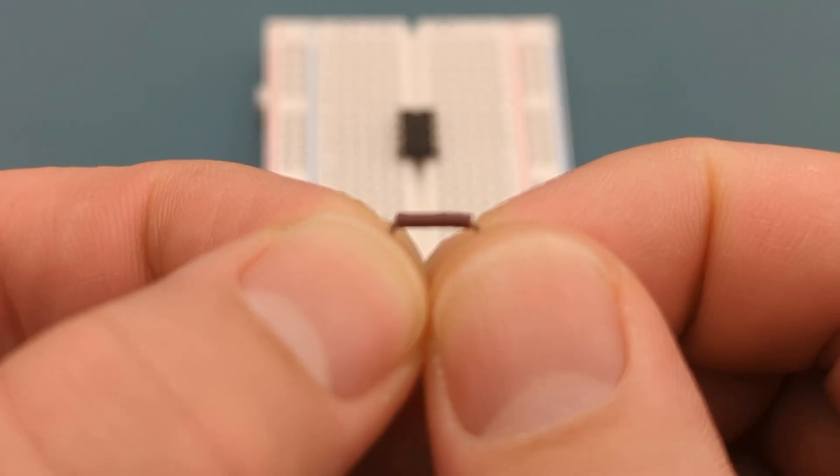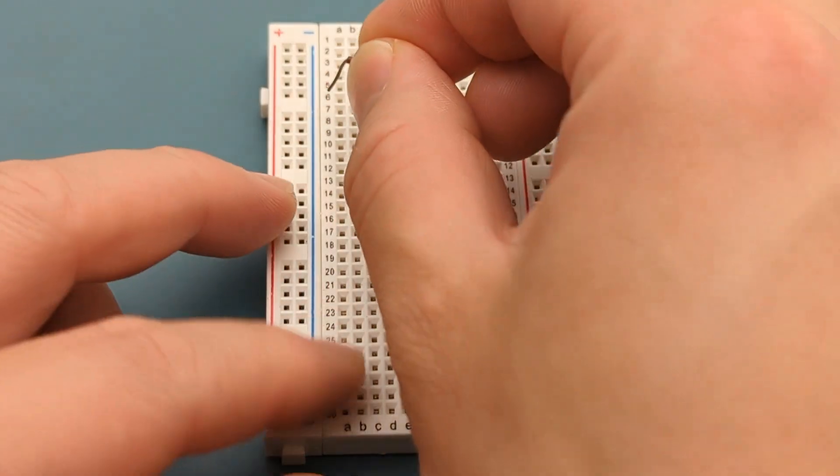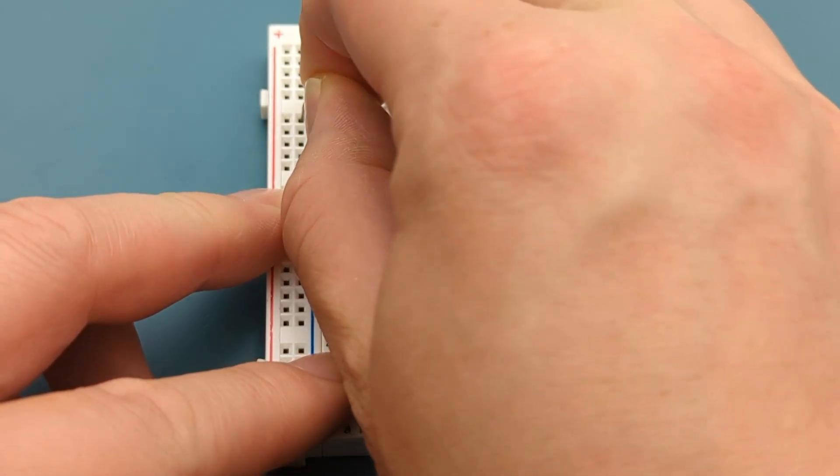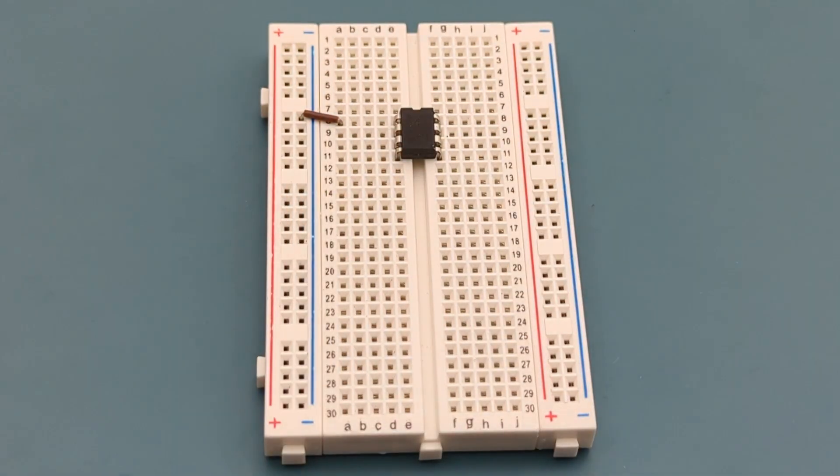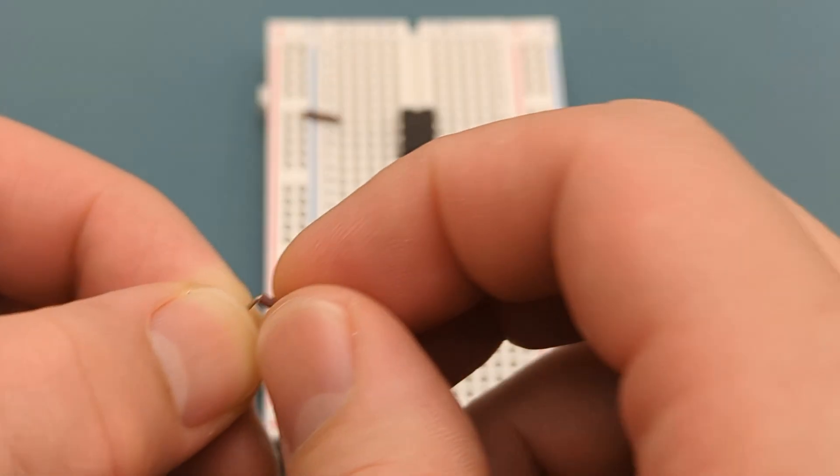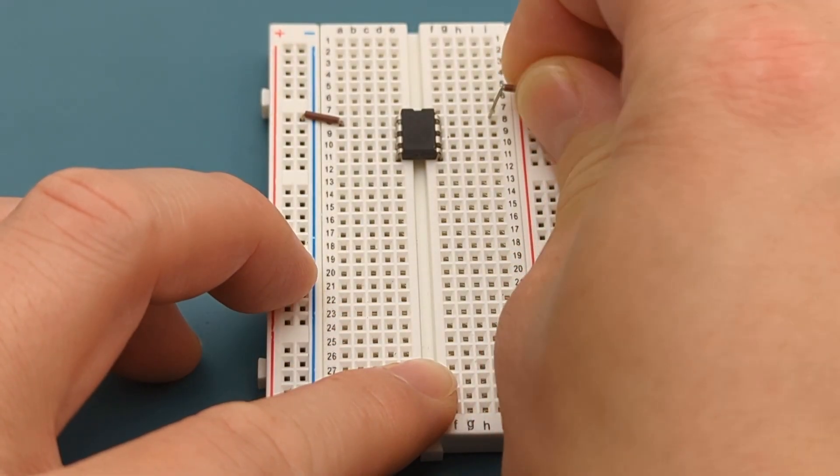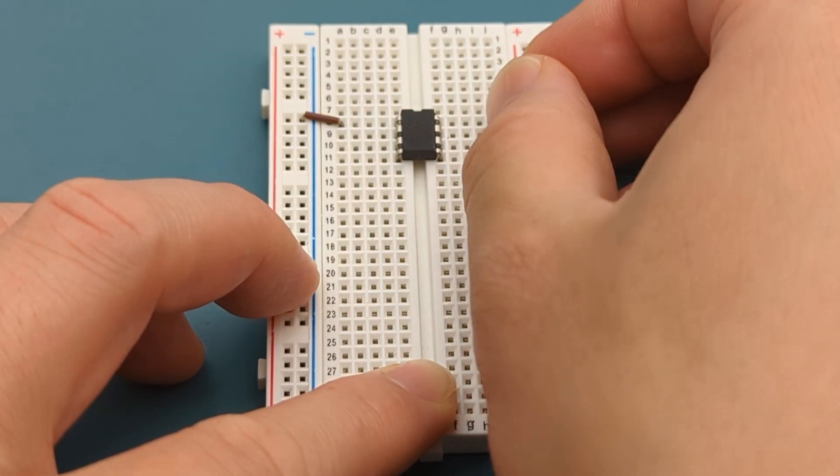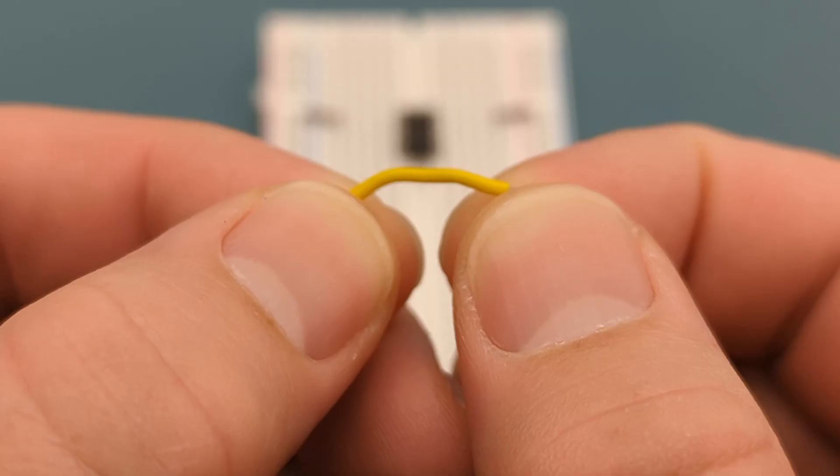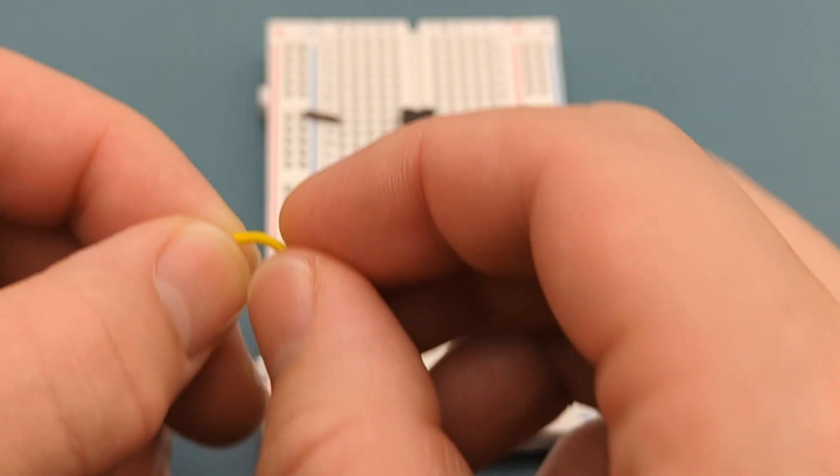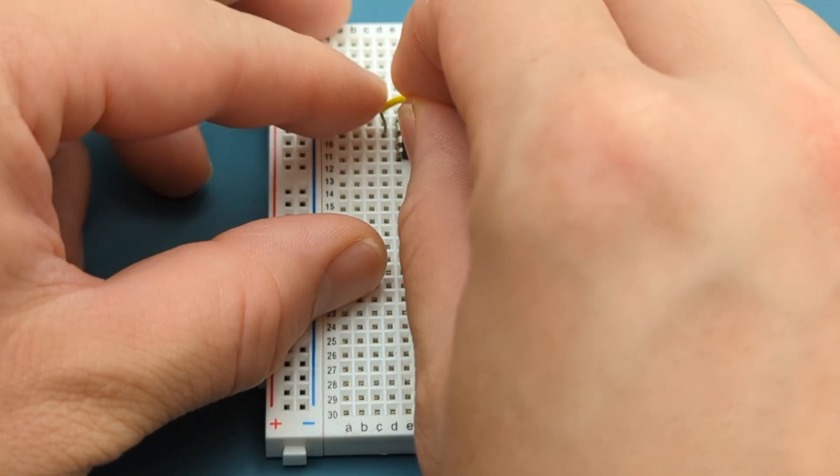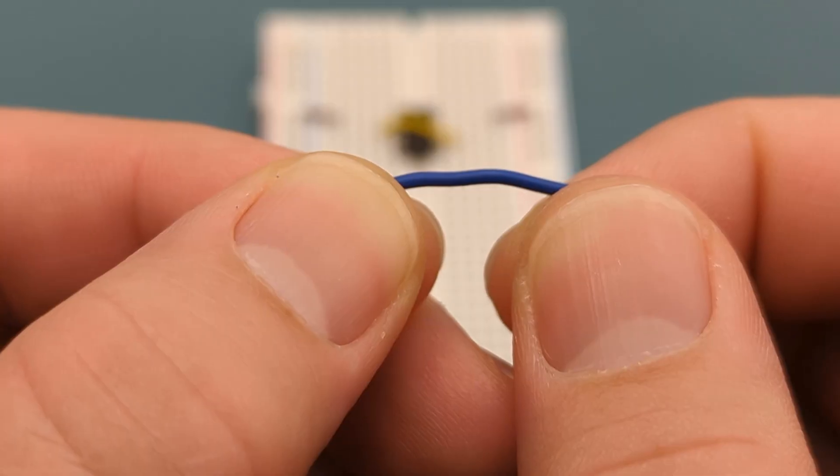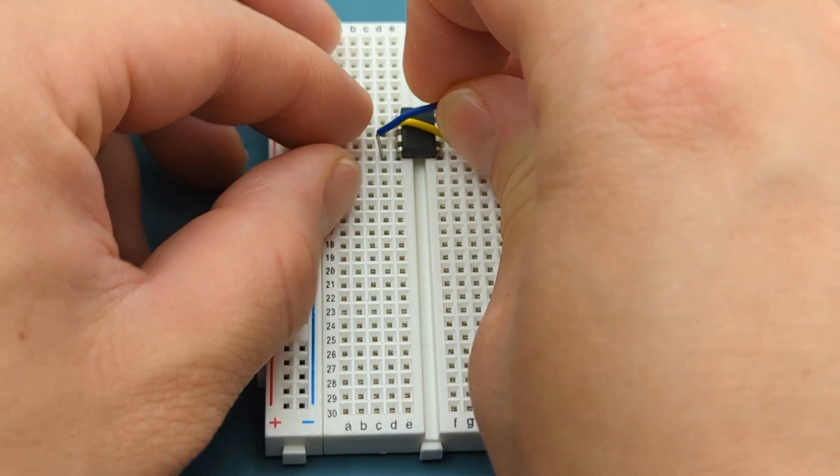A jumper wire connects pin 1 or ground to the negative rail. A jumper wire connects pin 8 or VCC to the positive rail. Use a jumper wire to connect pin 2 or trigger to pin 6 or threshold. Use a jumper wire to connect pin 4 or reset to pin 8 or VCC.